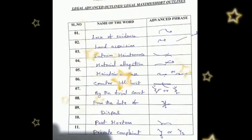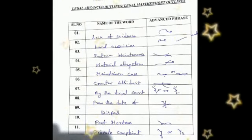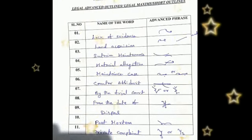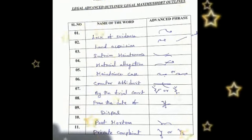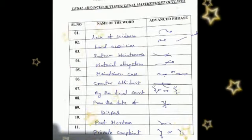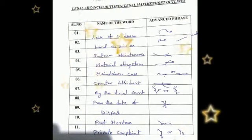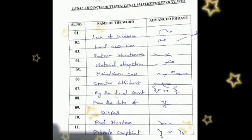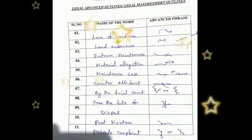The next word is 'by the trial court.' The outline of the word is the stroke above the line, attach a small tick for 'the,' then write T-R and attach -ker for 'court.'